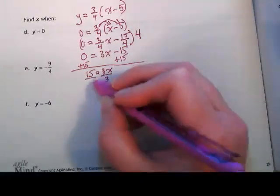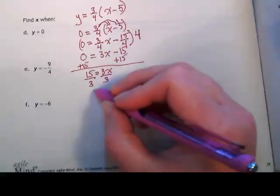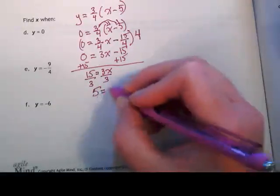And then we're going to divide by 3. 15 divided by 3 is 5, so 5 equals x.